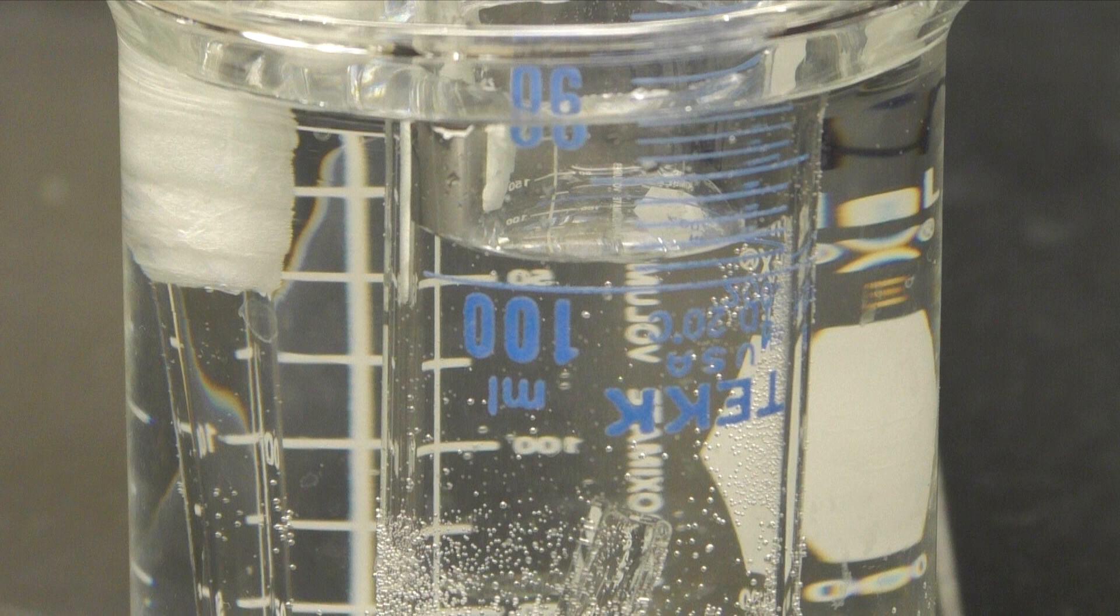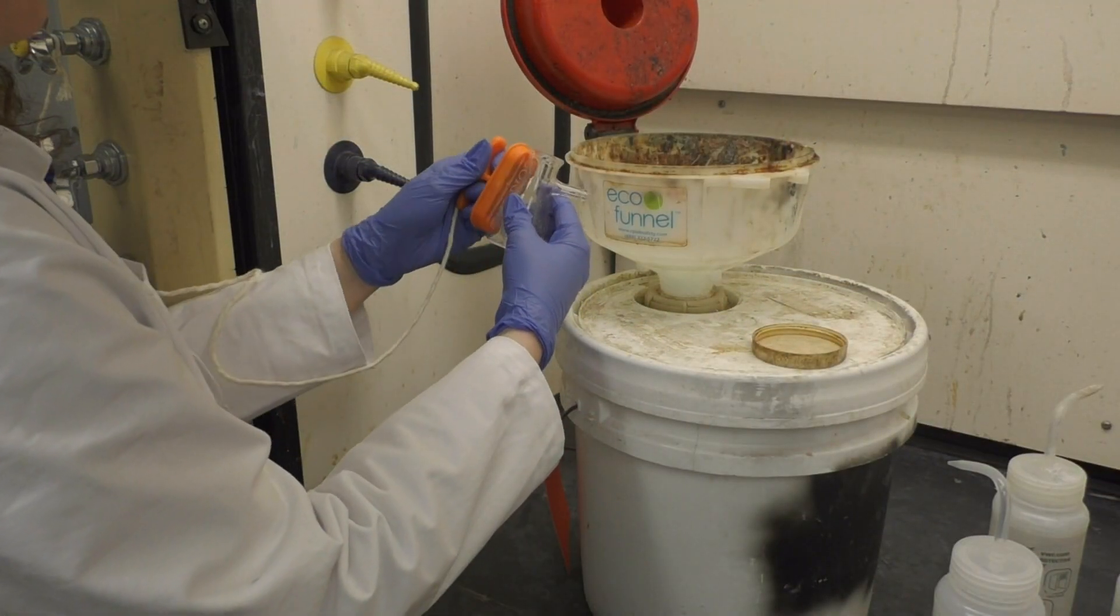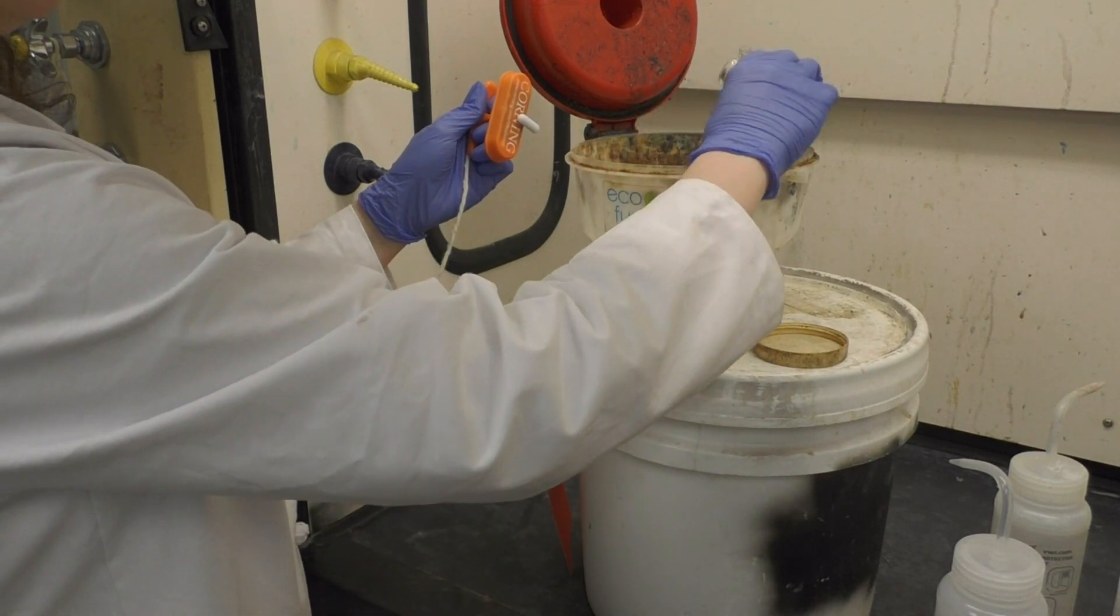When the reaction is done, be sure to record the final volume of gas in the graduated cylinder, and then disassemble the gas collection apparatus. Make sure you empty the waste from your filter flask into the liquid waste bucket, and be careful not to lose your stir bar.